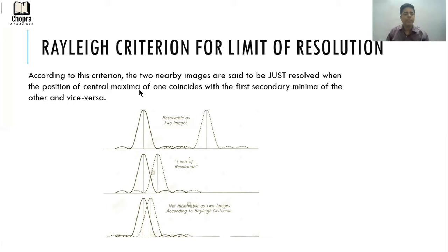Rayleigh gave this criterion that when you have two different wavelengths like this, they are very separated. This is what the instrument sees as two images, so it is easily resolved.